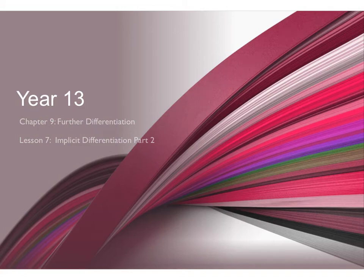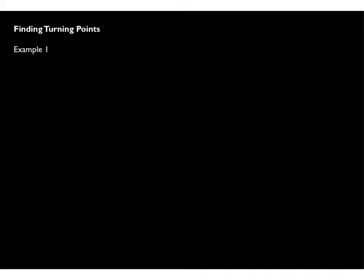Year 13, Chapter 9, Further Differentiation, Lesson 7, Implicit Differentiation Part 2. We're going to use what we've done in the previous lesson on how to differentiate functions that are defined implicitly, and we're going to apply this by solving a range of different questions, looking at identifying turning points of curves that have been defined in this way.